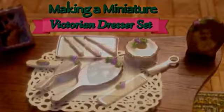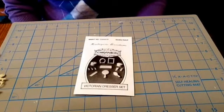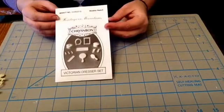Hi everyone. Welcome to this episode of our Dollhouse Miniature Crafting Series. Today we're going to be working on a Victorian dresser set in 1/12th scale, and we're going to be using the Christenbaum kit number 2210.